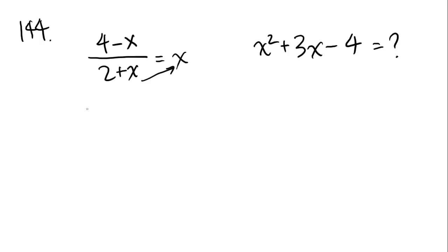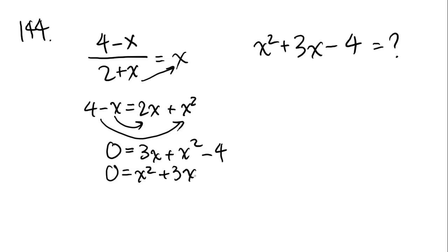Well let's start by just cross multiplying. You get 4 minus x equals 2x plus x squared, because x times 2 is 2x and x times x is x squared. And then why don't we move these over. This becomes 3x plus x squared minus 4 equals 0, or x squared plus 3x minus 4. I'm just rearranging these here to make it a bit more sightly. And well, what do you know? This equation is the same as this other equation that we're actually looking for the answer to. And we know that the answer is 0 because we just solved it. So then the answer is going to be 0, which is one of the answer choices, it's C. That was easy.